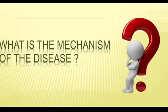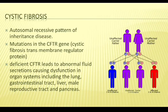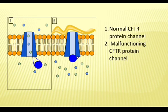What is the mechanism of the disease? Cystic fibrosis is an autosomal recessive inheritance disease, due to certain mutations in the CFTR gene — cystic fibrosis transmembrane regulator protein. Deficiency in CFTR protein leads to abnormal secretions which may affect the lung, gastrointestinal tract, liver, male reproductive tract, and pancreas. This CFTR protein is a channel protein that controls the flow of water and chloride ions in and out of the cells.